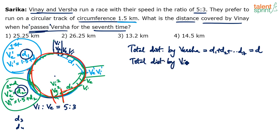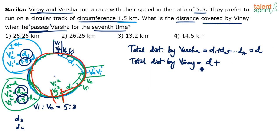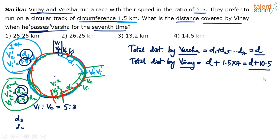What is the total distance covered by Vinay? Vinay covers whatever Varsha covered (D), plus 1.5 km each of the seven times. So total distance by Vinay = D + (1.5 × 7) = D + 10.5. We now know Varsha covered D and Vinay covered D + 10.5. We also know the speed ratio.